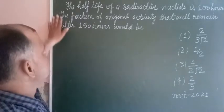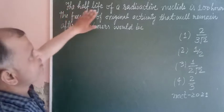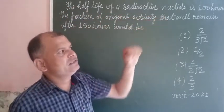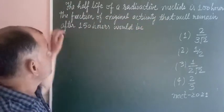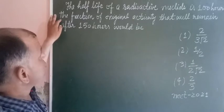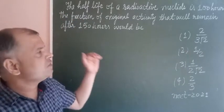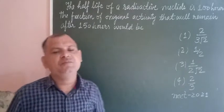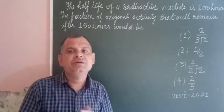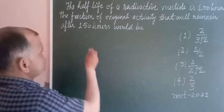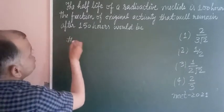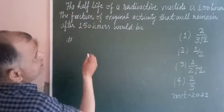The question is: the half-life of a radioactive nucleus is 100 hours. The fraction of original activity that will remain after 150 hours would be what? This is a radioactivity question stating that the half-life is 100 hours.